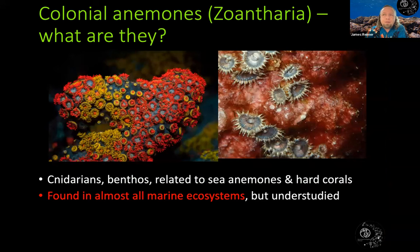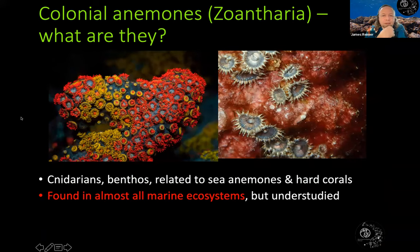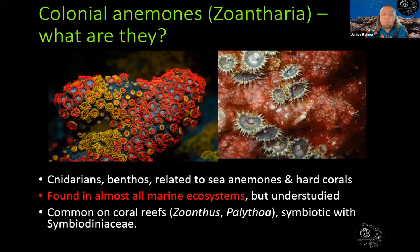I am very new to natural analog and ocean acidification and high pCO2 research. My original background is working on zoantharians — basically cousins of corals, scleractinian corals. They're cnidarians, they're benthos, related to sea anemones and hard corals. The thing I really like about zoantharians is they're found in almost all marine ecosystems, but they're really understudied. Today I'm going to focus on coral reef zoantharians — specifically Zoanthus and Palythoa. They have Symbiodiniaceae — endosymbiotic zooxanthellae — so they're just like scleractinian corals, photosynthesizing with their endosymbionts and living on coral reefs.